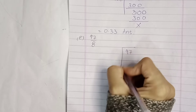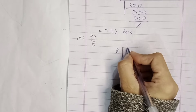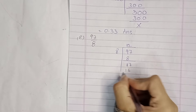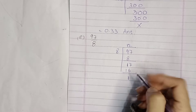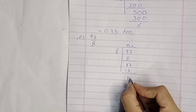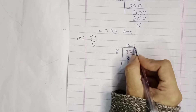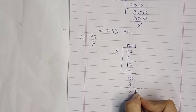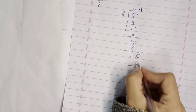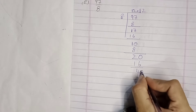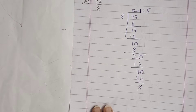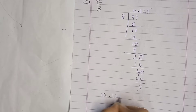Now part number E: 97 divided by 8. Eight, one, two — working through the steps. Then we add 0 to this 4, and add 0 to this 4. Then we get 12.125.